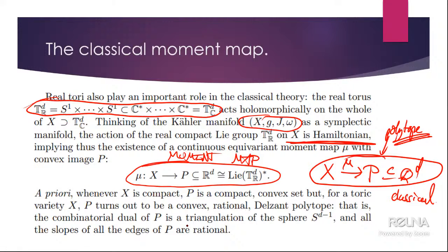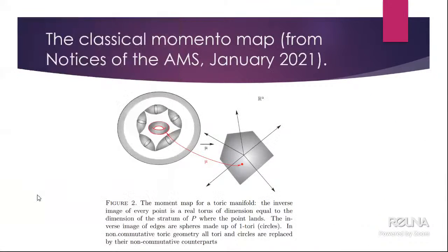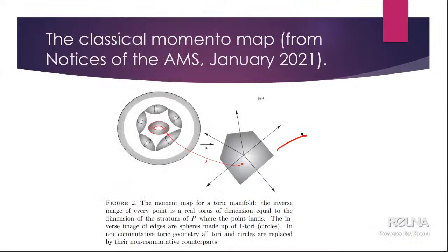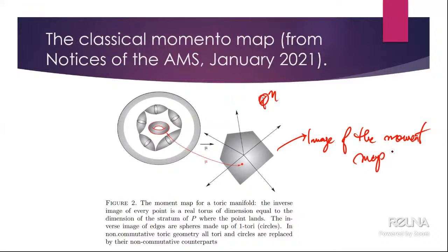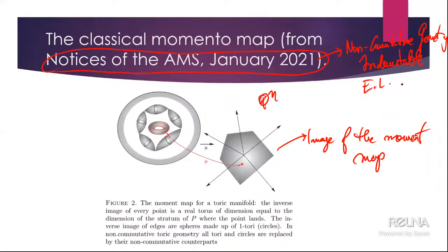Moreover the polytope satisfies a combinatorial condition — in the simplest cases it is the dual of a triangulation of the sphere. The image of the moment map is Q_n. This appears in a paper called 'Non-commutative Geometry' which will appear in the Notices of the American Mathematical Society in January, but is already on the archive.